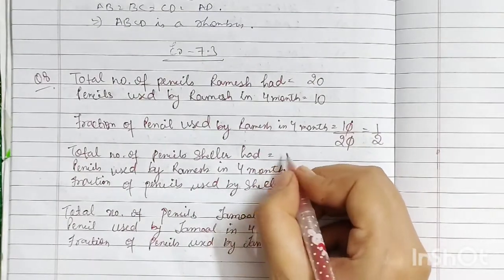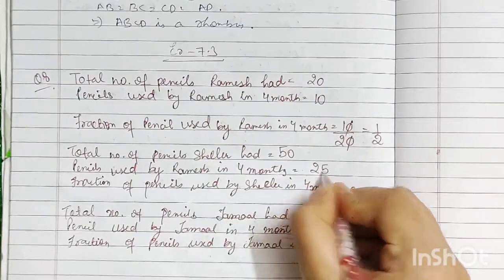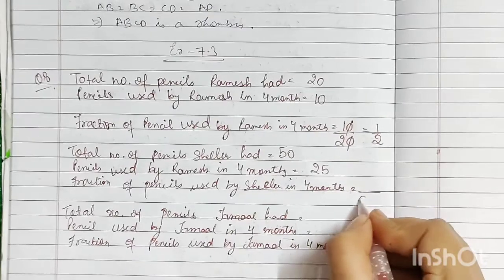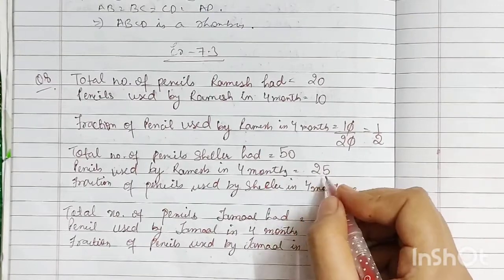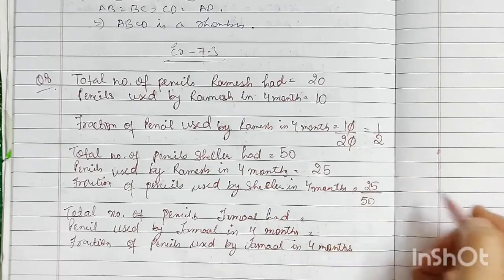Then, Shilu had 50 pencils, and he had 25 pencils used up. So, the fraction is 25 upon 50. The denominator is the total number, and the numerator is the fraction used up, which simplifies to 1 by 2.